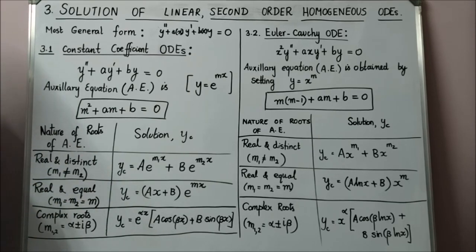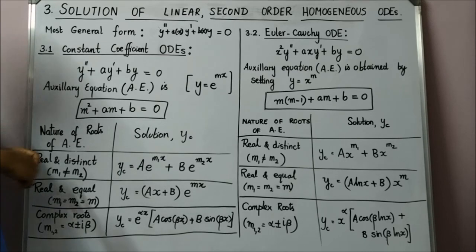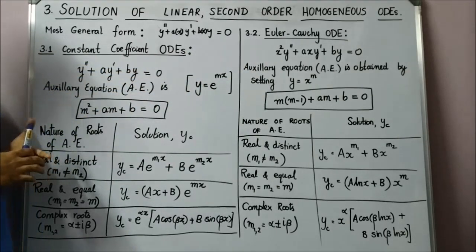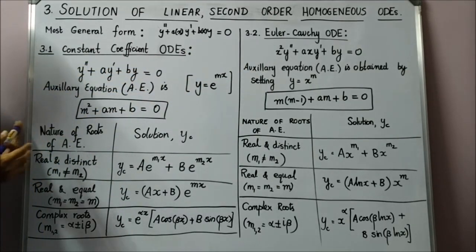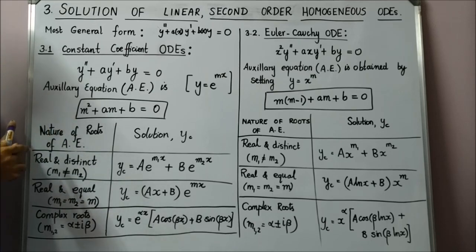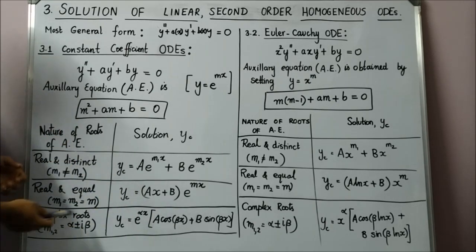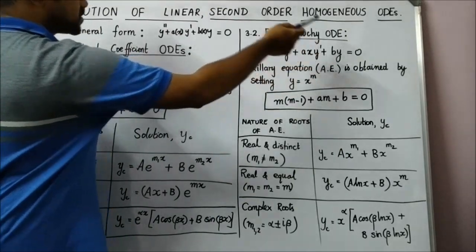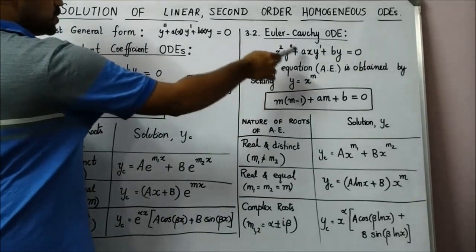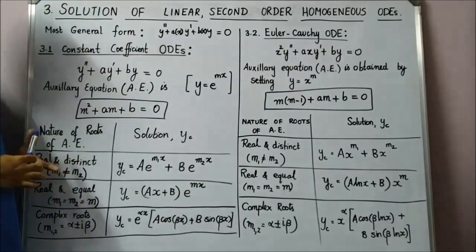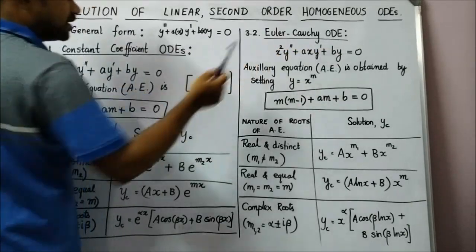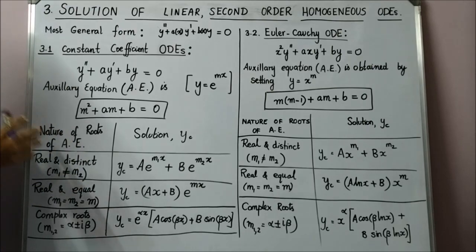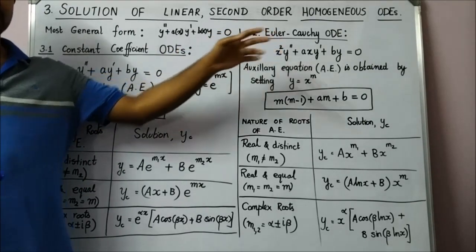Now coming to Cauchy-Euler equations. In Cauchy-Euler equations, it is a variable coefficient equation — the coefficients are functions of x. Not just any function of x, but the coefficients should be decreasing powers of x. For example, x squared, then x, then a constant — that is x^2, x^1, and x^0 — corresponding to Y double prime, Y prime, and Y respectively. If the coefficients are decreasing powers of x, you call the ODE a Cauchy-Euler ODE.